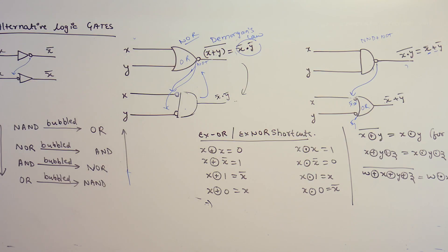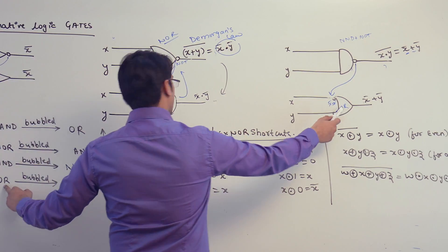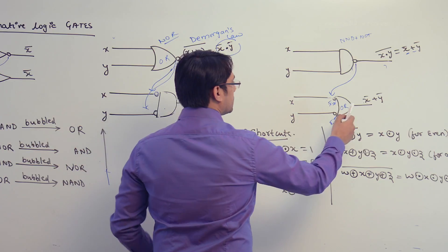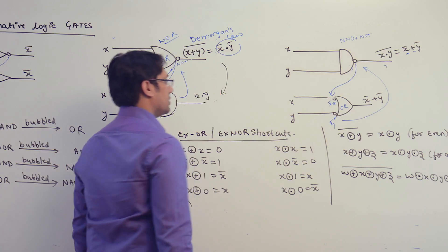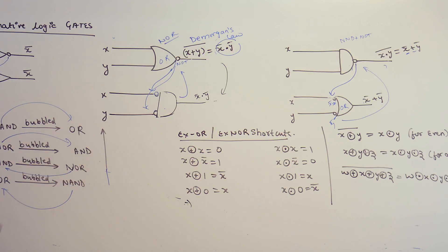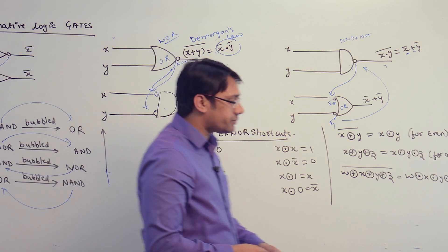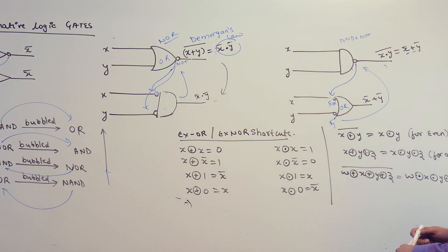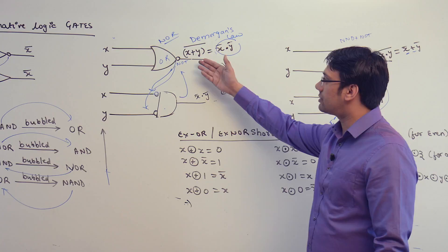It becomes an OR gate. In the same way, if we have an OR gate and bubble it, shifting the bubble gives us the same result again — I have written it in two ways. So you can clearly see: this is how you can change one gate to another gate.